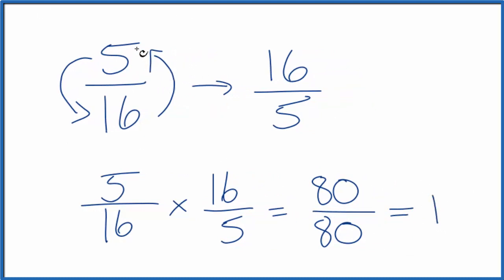The reciprocal for 5 16ths, that's 16 fifths. This is an improper fraction. We could change it to a mixed fraction. 5 goes into 16, 3 times with 1 left over. So 3 and 1 fifth, that's equivalent to 16 fifths.